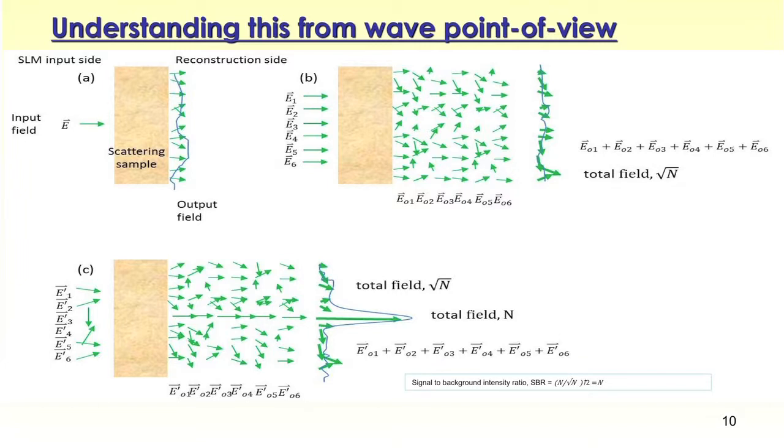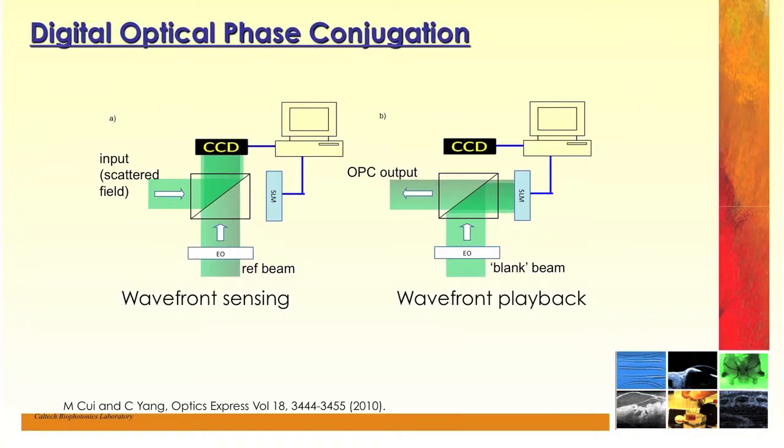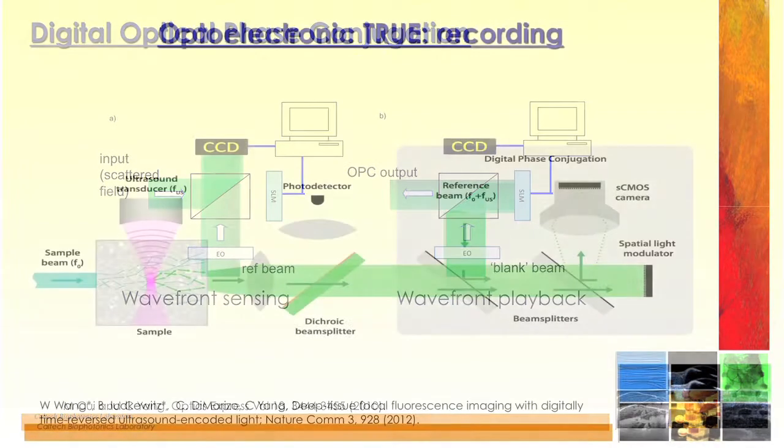Going forward, if we can push this technology further — make it fast enough to address living tissue and push the sensitivity of the technique further — we will be able to take that optical light focus and put it deep within tissue to interrogate locally for biochemical signatures. This will be useful for early detection of cancer in ways that x-ray, ultrasound, and MRI haven't been able to do well, because they don't provide much biochemical information. With this deep focusing approach using light, we potentially will be able to do that.